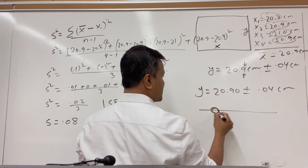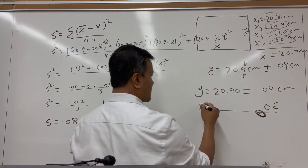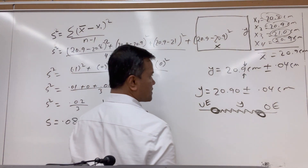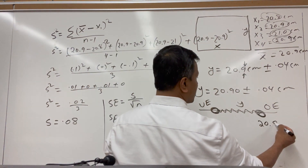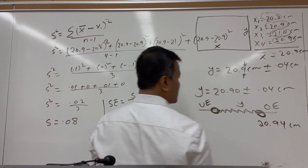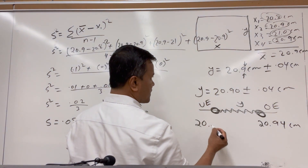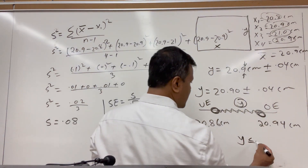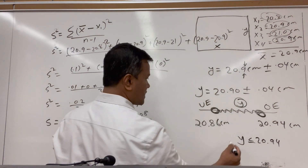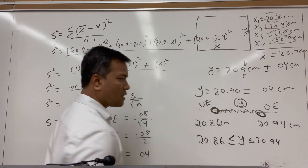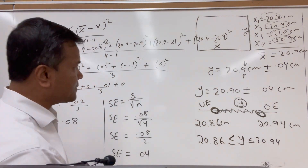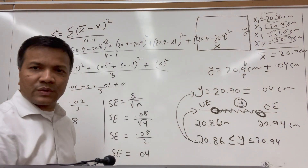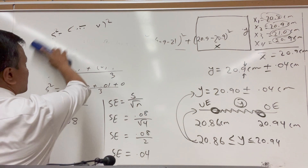So the standard error is 0.04. Our final answer is Y = 20.90 ± 0.04 cm. That means the measurement has an overestimate of 20.94 cm and an underestimate of 20.86 cm, and Y lies between those values. You can write this as an inequality or in the plus-minus notation — they are all equivalent.